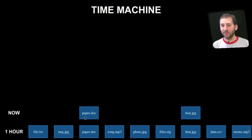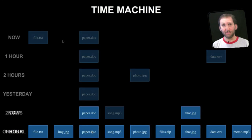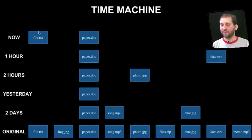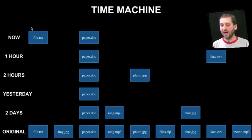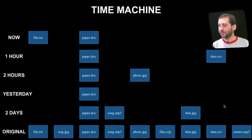So not only do you have a copy of everything on there, but you have a copy of this document — the current one and the old one as well. If we look at what happens over a longer period of time, Time Machine has a few hourly backups from today, but then it also has one from yesterday, from two days ago, and all the way back to the original. File.txt has changed just recently and has that copy and the old original. Paper.doc is changing all the time, so it has a copy with every backup.